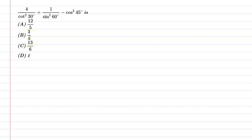Hello friends, first of all let us understand the question. The question is: 4 upon cos square 30 degree plus 1 upon sin square 60 degree minus cos square 45 degree is.